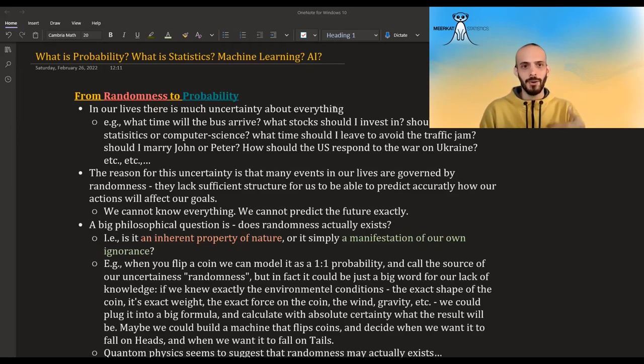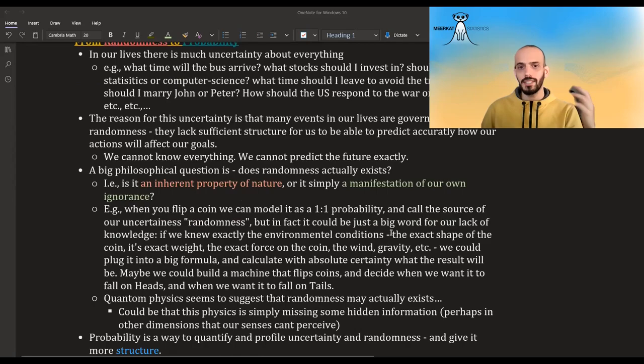There's a lot of uncertainty about how things should go and what decisions to make in order to optimize our objectives, to optimize what we are wanting to get from life. And the reason for this uncertainty is that our lives are basically governed by this thing called randomness. We don't see about everything, this complete structure of it, and are able to predict completely accurately how our actions will affect our future and our goals for the future. So we cannot know everything and we cannot predict the future exactly.